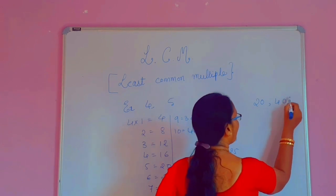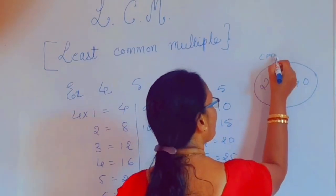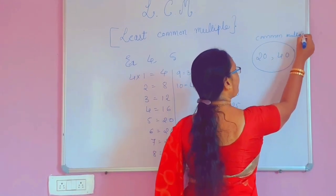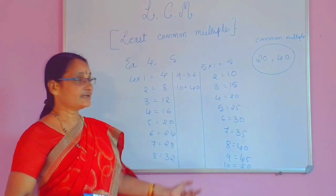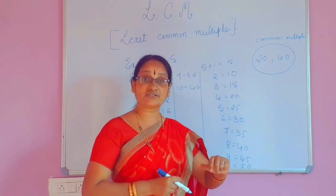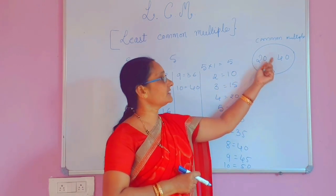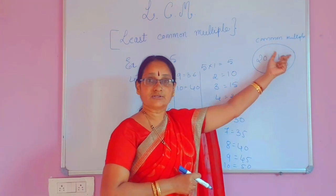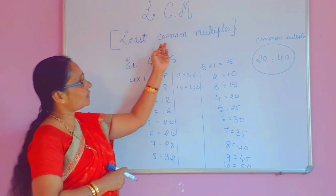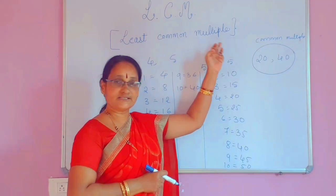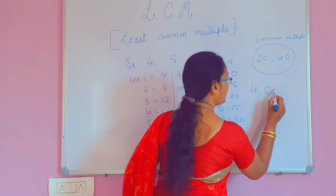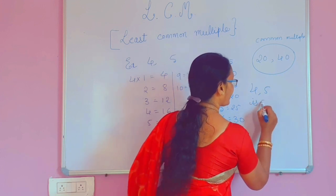20 and 40 are 2 common multiples. In these 2 common multiples, which is the least one? Which is the smallest one? Here, 20 is the smallest common multiple. So for this smallest, they have given one name — that is Least Common Multiple. This is what LCM. So LCM of 4 and 5 is 20.